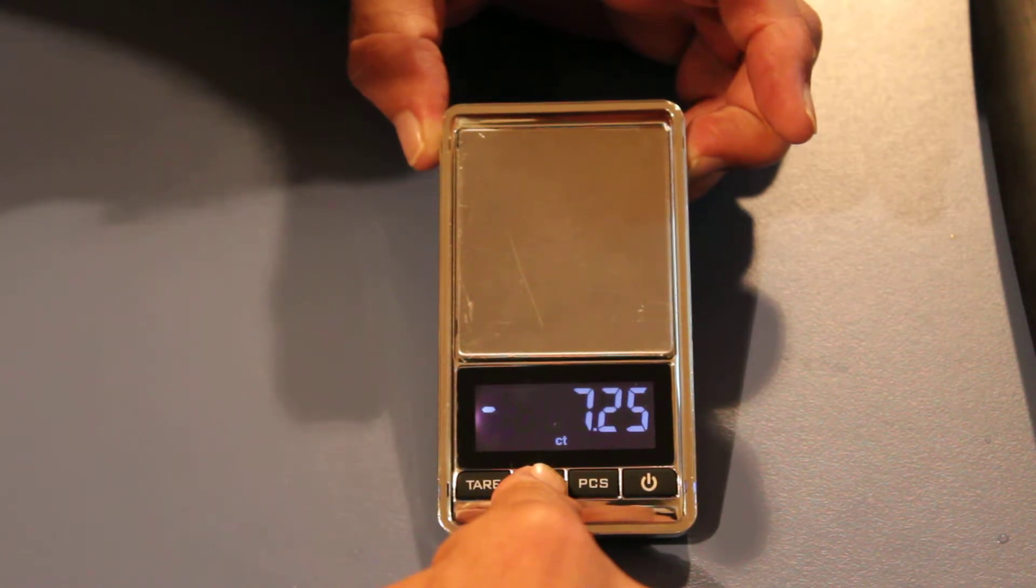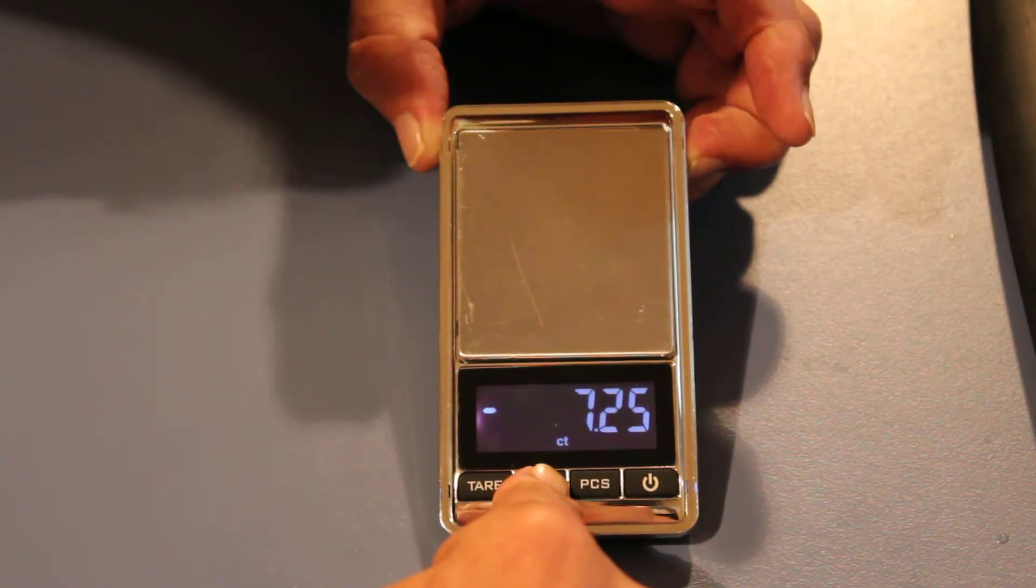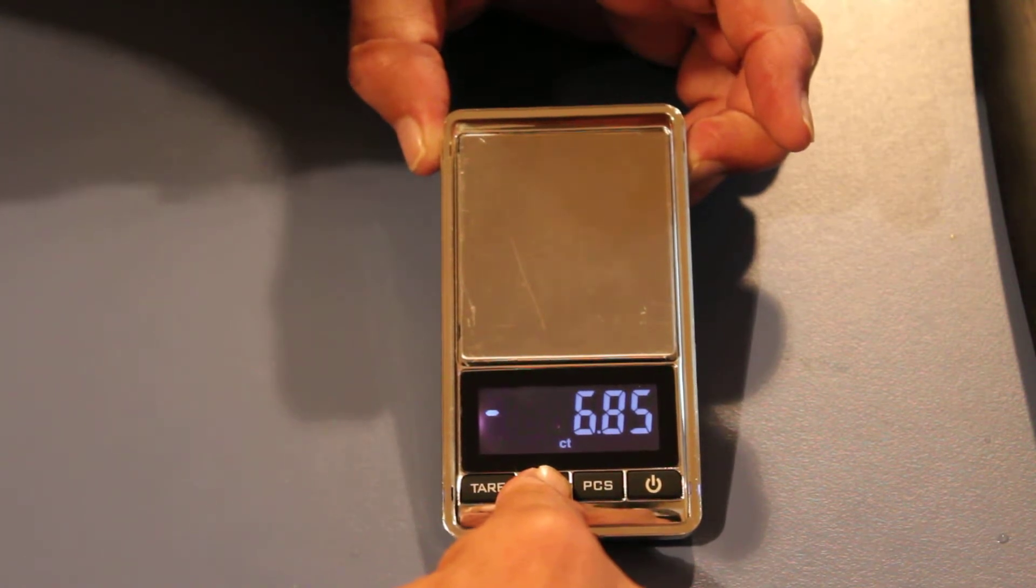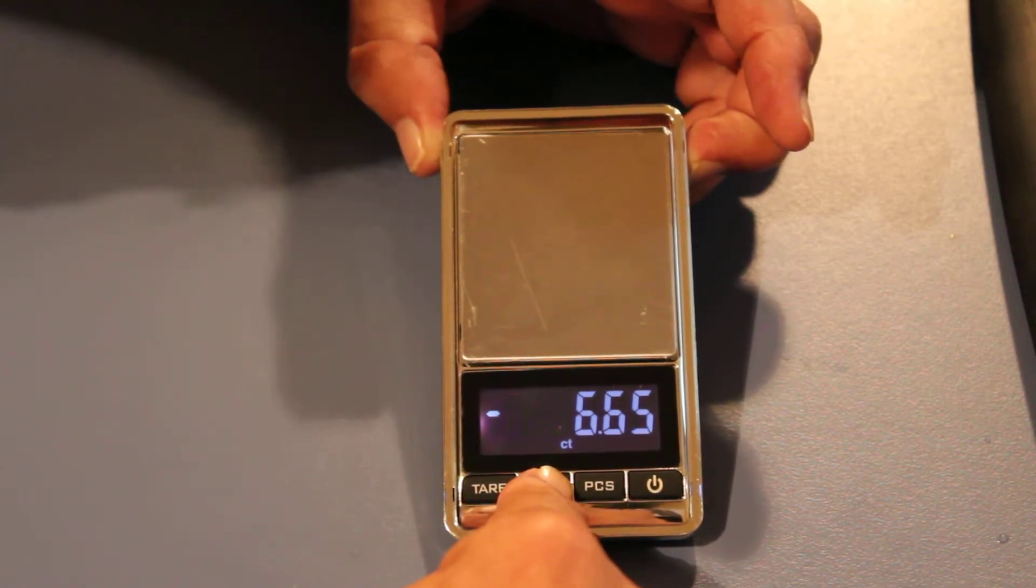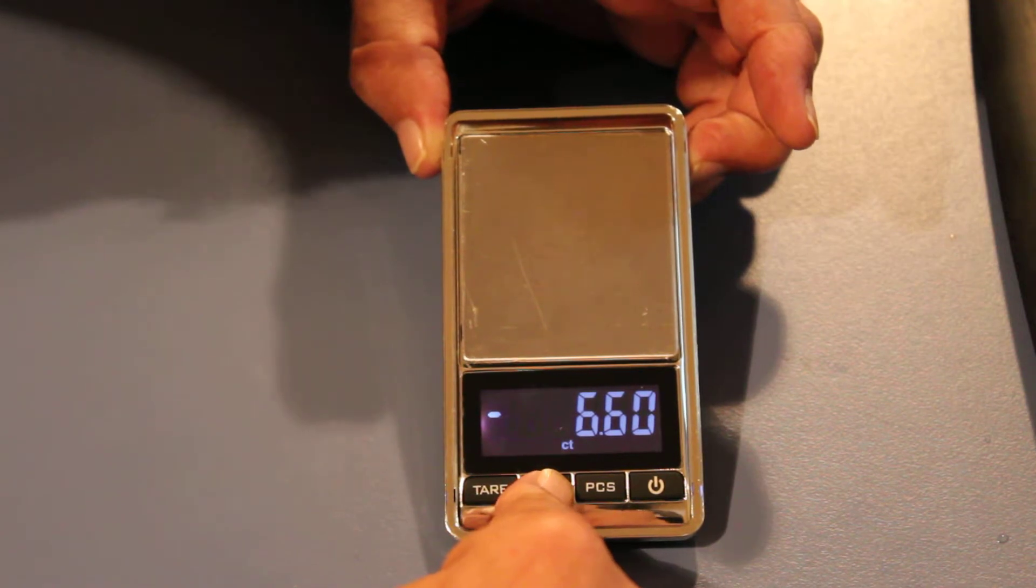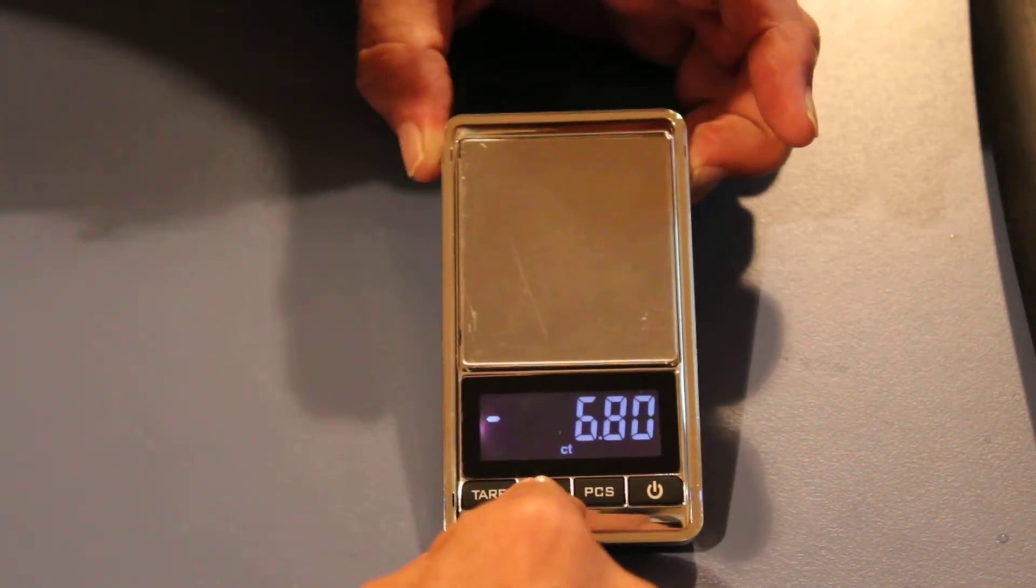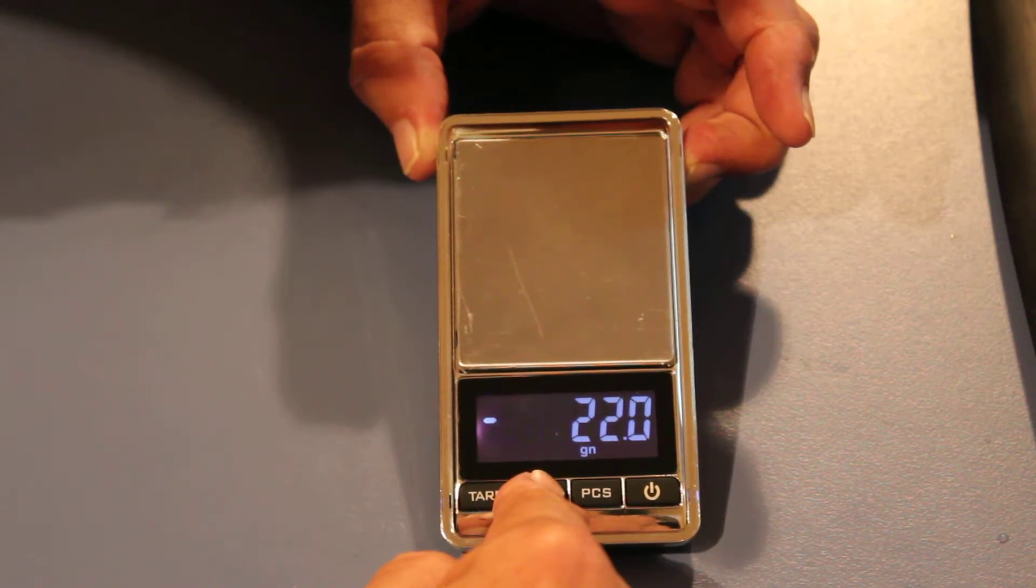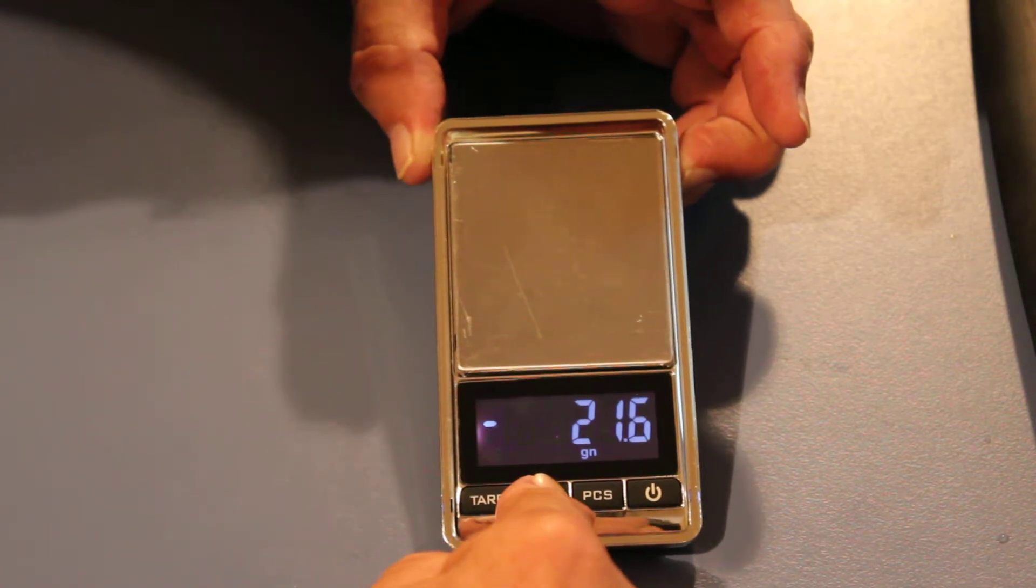You know, if you're out finding opals or other gemstones whatever, you might want to use them. I don't really know anything about that, but hopefully I'll find something and have to learn. And GN, which I believe would be grains. I've heard talk of grains before, but I don't know anything about that either.